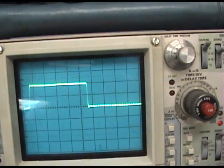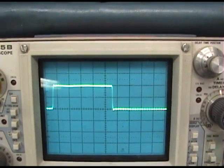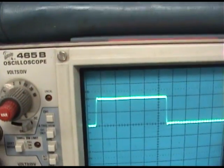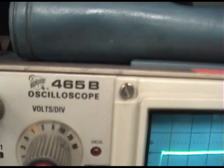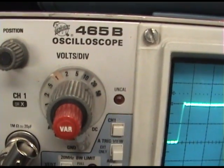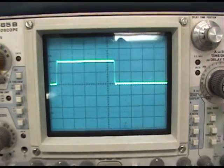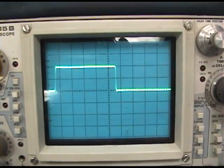Notice that the pulse takes up two vertical divisions and my volts per division is 1 volt. So that means we have an amplitude of 2 volts.